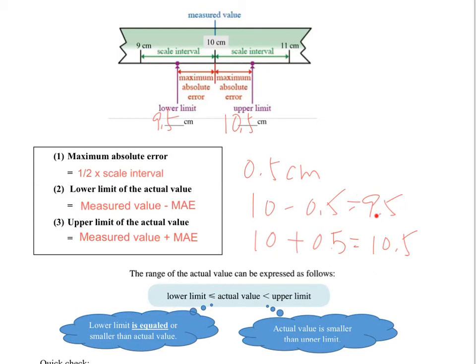So it means while we have 9.5, it is also possible because it can also round off this 9.5, round off to 10 as well.